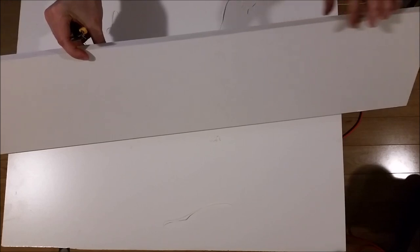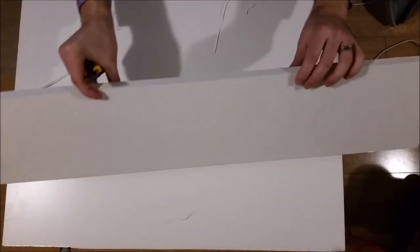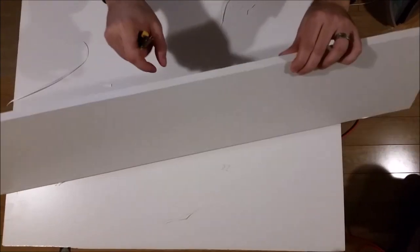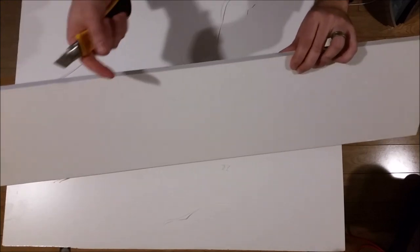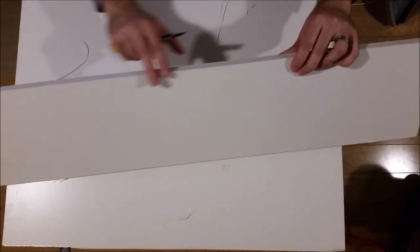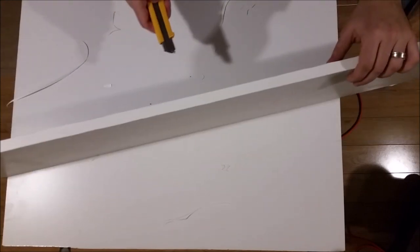But another thing you can do to clean up the edge after that is to use a block sander. Just a piece of wood with very fine grain sandpaper or an actual sanding sponge. You can just clean up the edge a little bit, make it a bit smoother. But that's a personal preference.